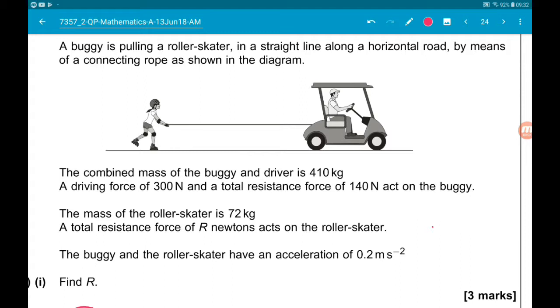Okay, question 17, the final question. So a buggy is pulling a roller skater in a straight line along a horizontal road by means of a connecting rope as shown. The combined mass...